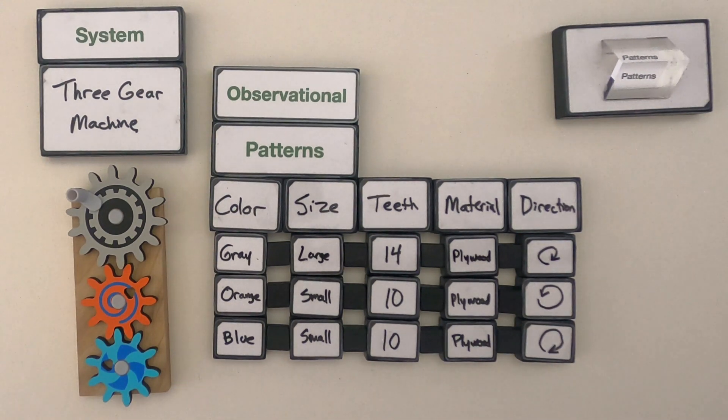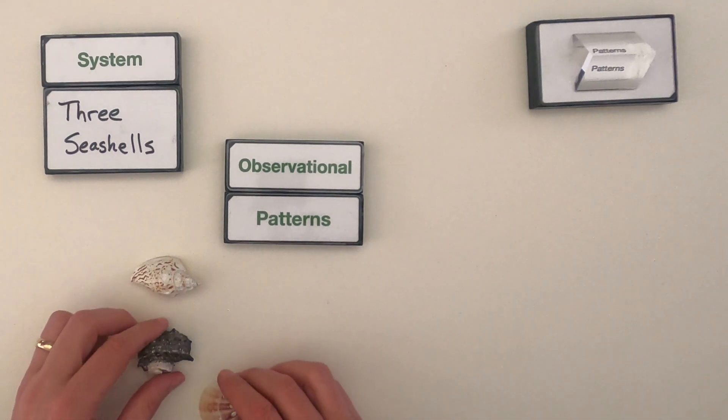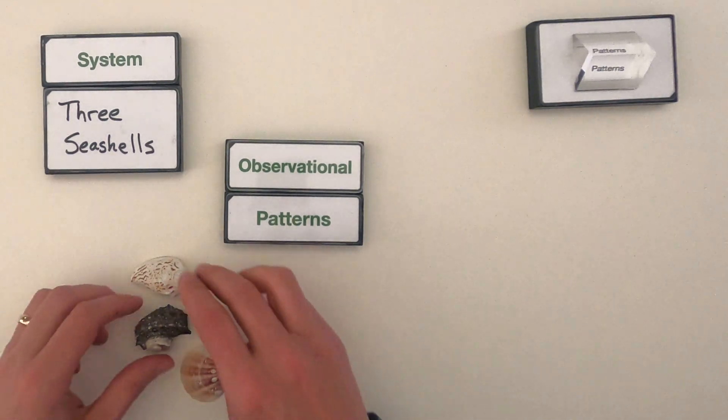Let me clear this out and then I'm going to give you a different set of objects and I want you to find some observational patterns. I set up another system for you to investigate. I've got three seashells.